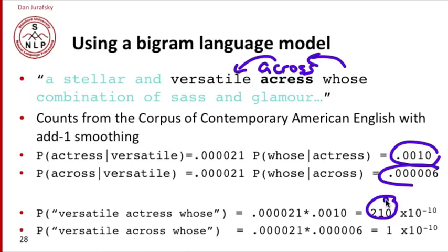If we multiply these things out, the probability of versatile actress whose is a much higher probability than the sequence versatile across whose. The noisy channel model with the bigram language model correctly picks the correction actress.